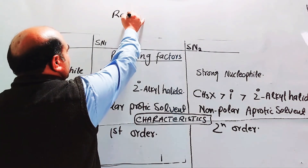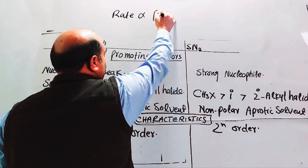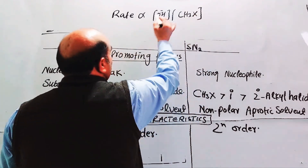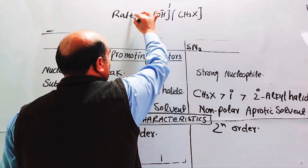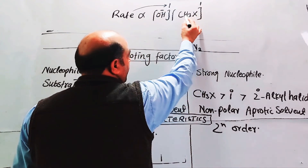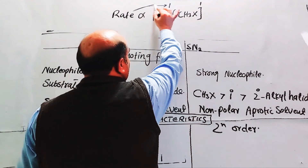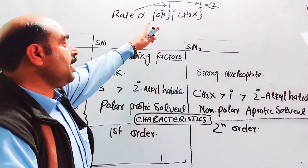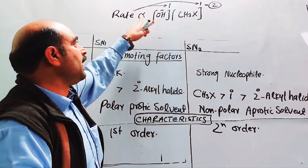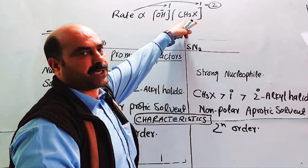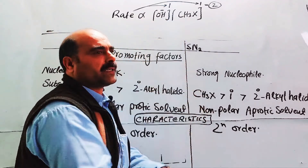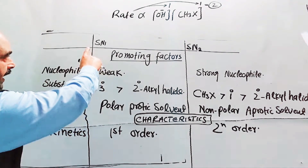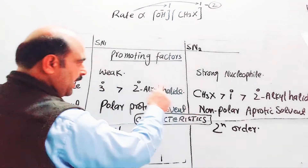In SN2, the rate of reaction is directly proportional to both the concentration of the nucleophile (e.g., hydroxide ion) and the concentration of the primary alkyl halide. First order with respect to each reactant gives overall second order. If hydroxide ion concentration doubles, the rate doubles; if alkyl halide concentration doubles, the rate also doubles — making the overall rate four times if both double.